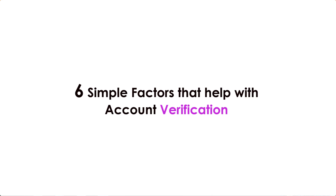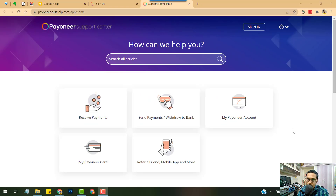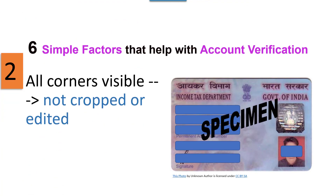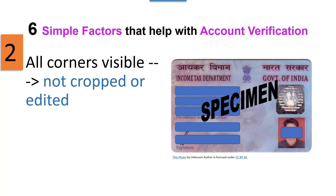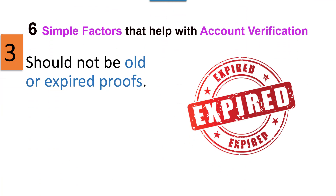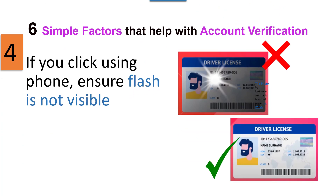Now let's go over the account verification process and some factors to help you avoid delays in getting approved — use this like a checklist. Number one: upload color copies of your original documents. Make sure details are clear, all corners are visible, and nothing is cropped or edited. Also ensure that any dates on your cards or proofs are valid — current or future dates, not expired.